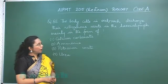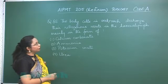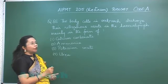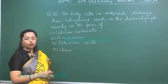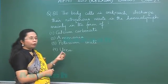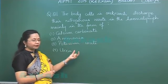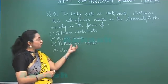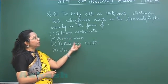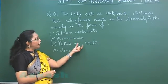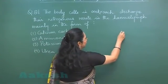Question number 81 is from the excretory system of cockroach. We know that cockroach is uricotelic — it excretes uric acid. But before being excreted, uric acid is first synthesized in the form of potassium urate, and this potassium urate is extracted from the hemolymph by the Malpighian tubules.